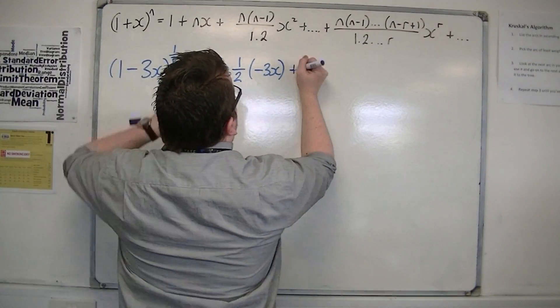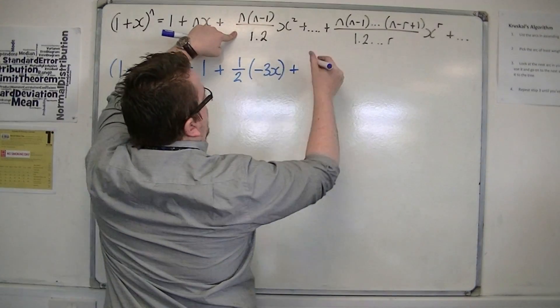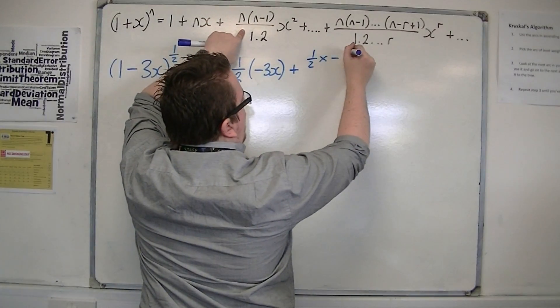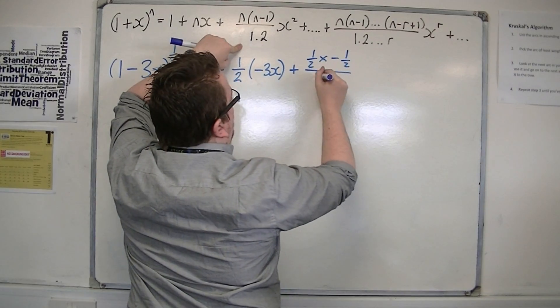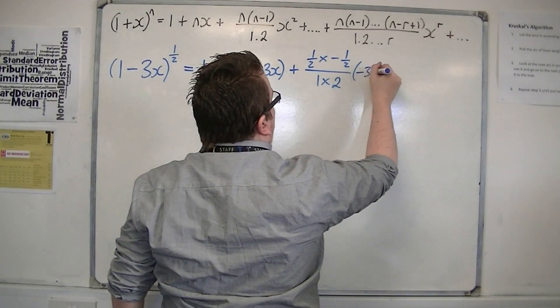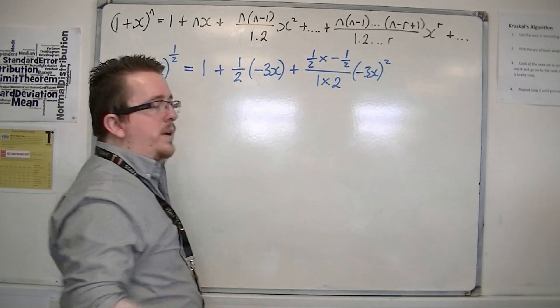Then I've got the next term. I've got 1/2 times (1/2 - 1), which is -1/2, all over 1 times 2, times x squared. Well, that's (-3x) squared. Notice how I'm putting it in a bracket.